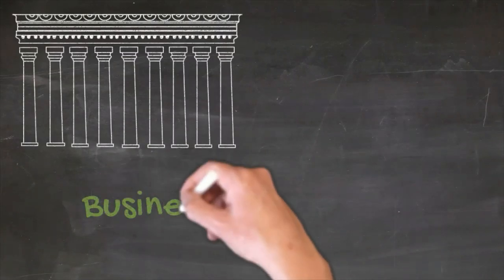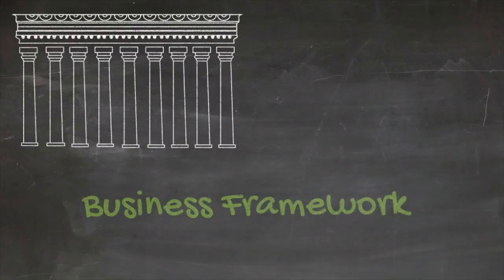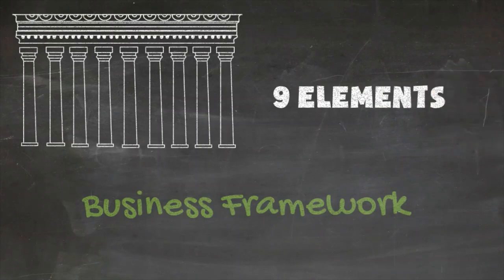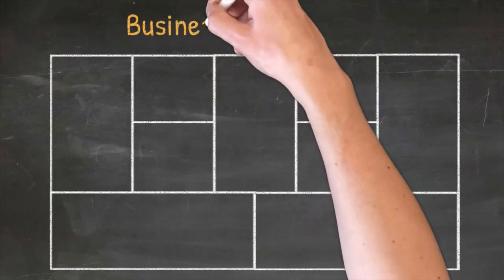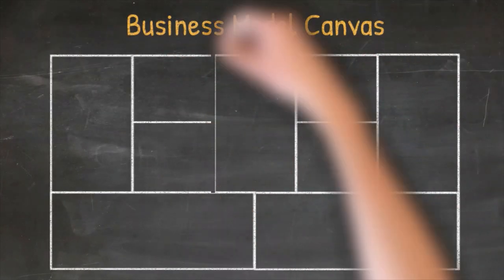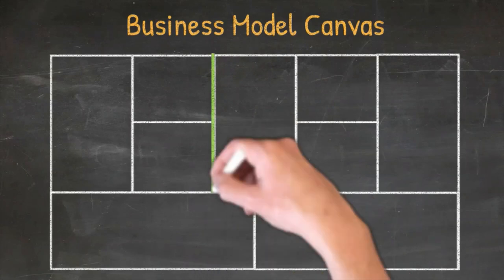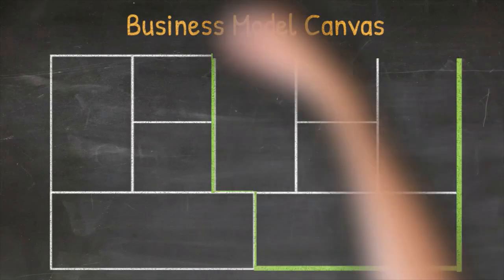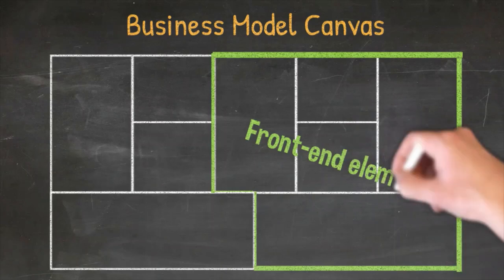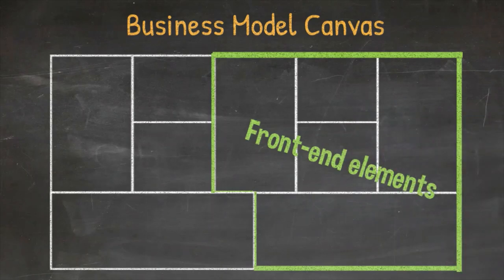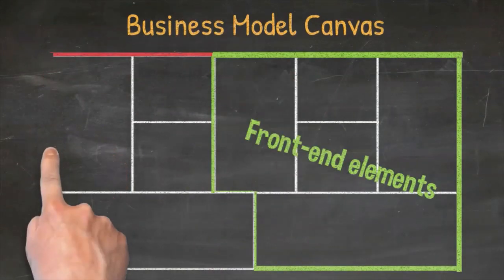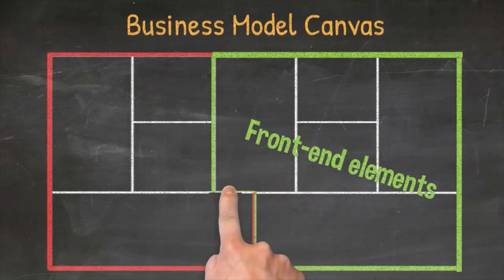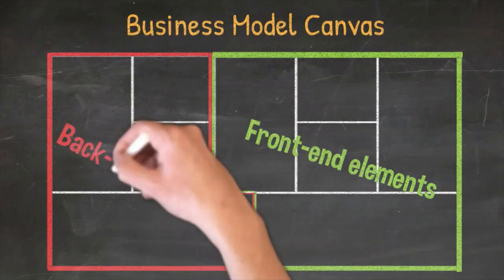The Business Model Canvas is a business framework that consists of nine elements. It has two sides: the front side, or the revenue side, also known as the front-end elements, and the back side, or the cost and production side, also called the back-end elements.